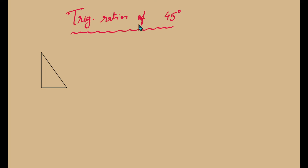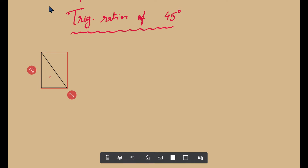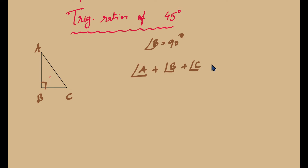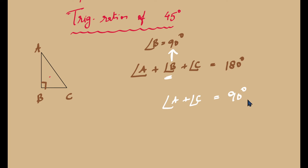We have a right-angled triangle ABC, where angle B is equal to 90 degrees. In any triangle, the sum of all three angles — angle A plus angle B plus angle C — is equal to 180 degrees. Since angle B is 90 degrees in this right-angle triangle, angle A plus angle C must add up to 90 degrees.